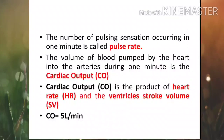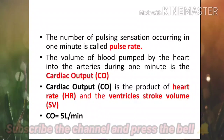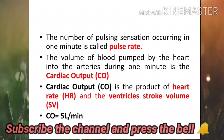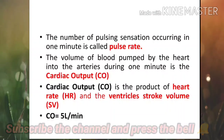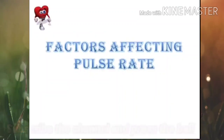The number of pulsing sensations occurring in one minute is called pulse rate. The volume of blood pumped by the heart into the arteries during one minute is called cardiac output. Cardiac output is the product of heart rate and stroke volume. When an adult is resting, the heart pumps about five liters of blood each minute, so the cardiac output is five liters per minute.